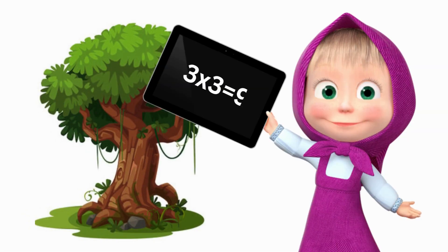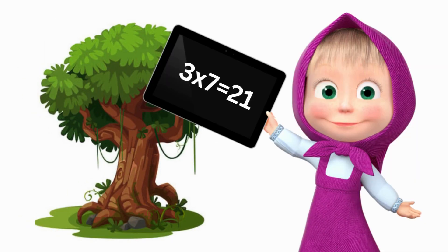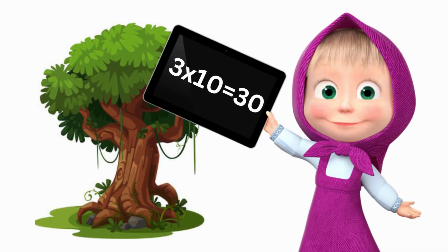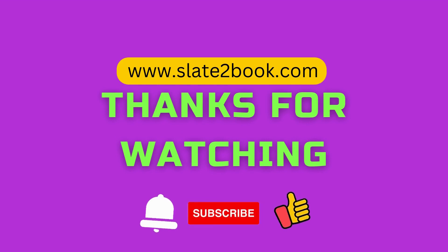Three threes are nine, three fours are twelve, three fives are fifteen, three sixes are eighteen, three sevens are twenty-one, three eights are twenty-four, three nines are twenty-seven, three tens are thirty.